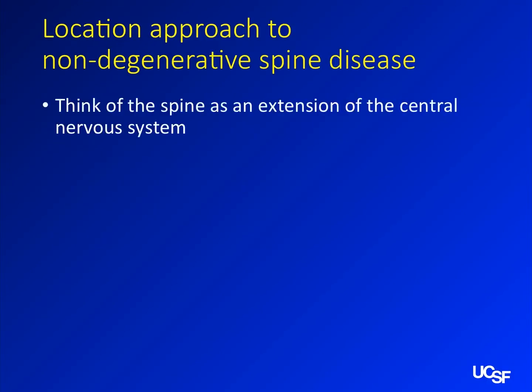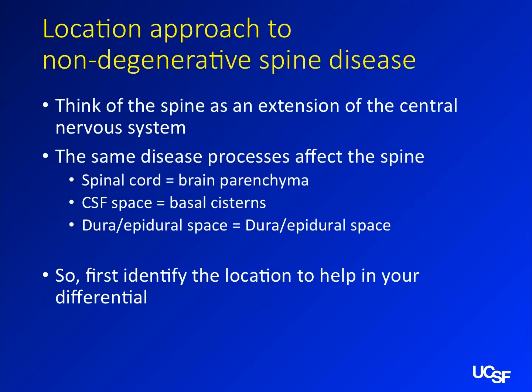As I mentioned earlier, the spine is really just an extension of the CNS. So all of the disease processes that you can get in the brain, you can more or less get in the spine. Statistically the distribution can be somewhat different, but think of it that way. Your spinal cord is sort of the brain parenchyma. You've got cisterns that are your CSF space, and then the dura is sort of the dura. It's best to identify the space where your pathology is and know where it is.